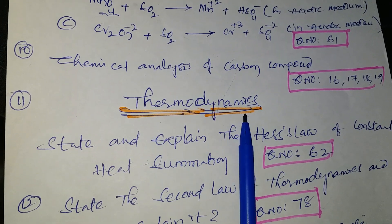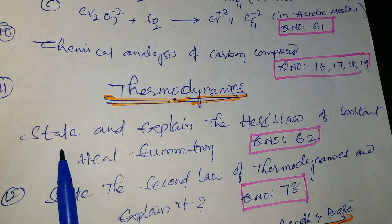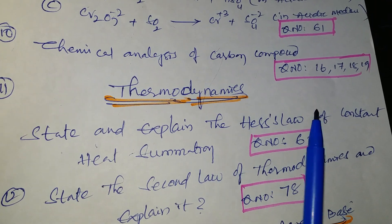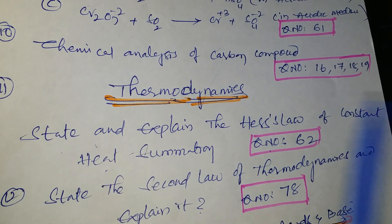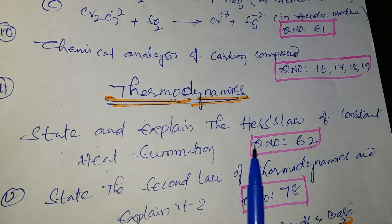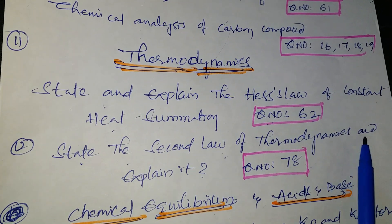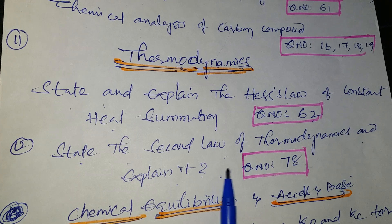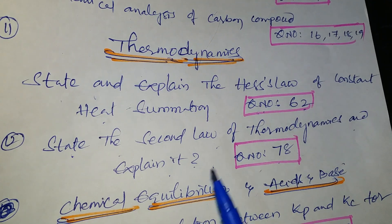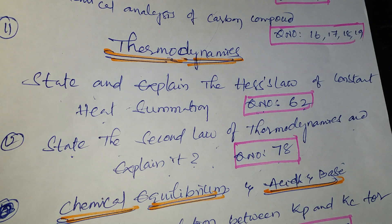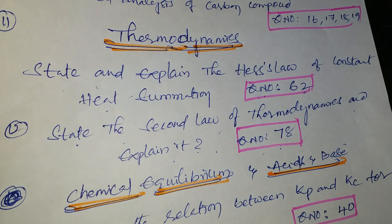Next lesson is thermodynamics. First: state and explain Hess's law of constant heat summation — question number 62. Next: state the second law of thermodynamics and explain it — question number 78. In thermodynamics I gave only these two questions: Q62 (Hess's law) and Q78 (second law of thermodynamics).